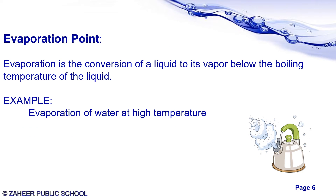The conversion of liquid to gas may also be observed in evaporation. Evaporation can be defined as the conversion of liquid to its vapor below the boiling temperature of the liquid. You can see the evaporation of water at high temperature as an example. When water boils and turns into steam, it is called evaporation.